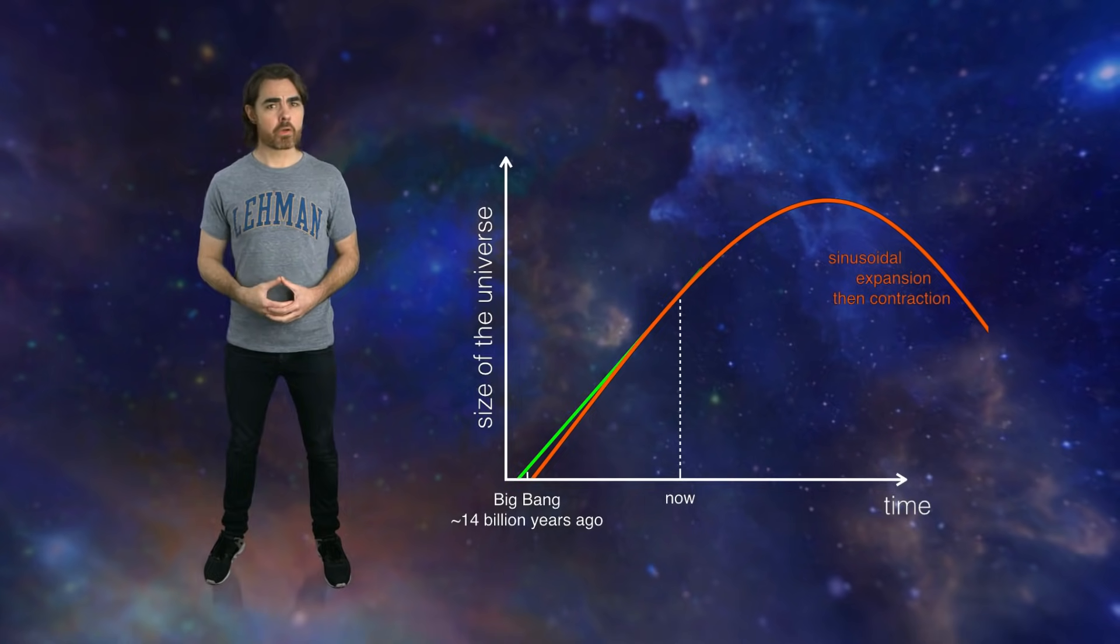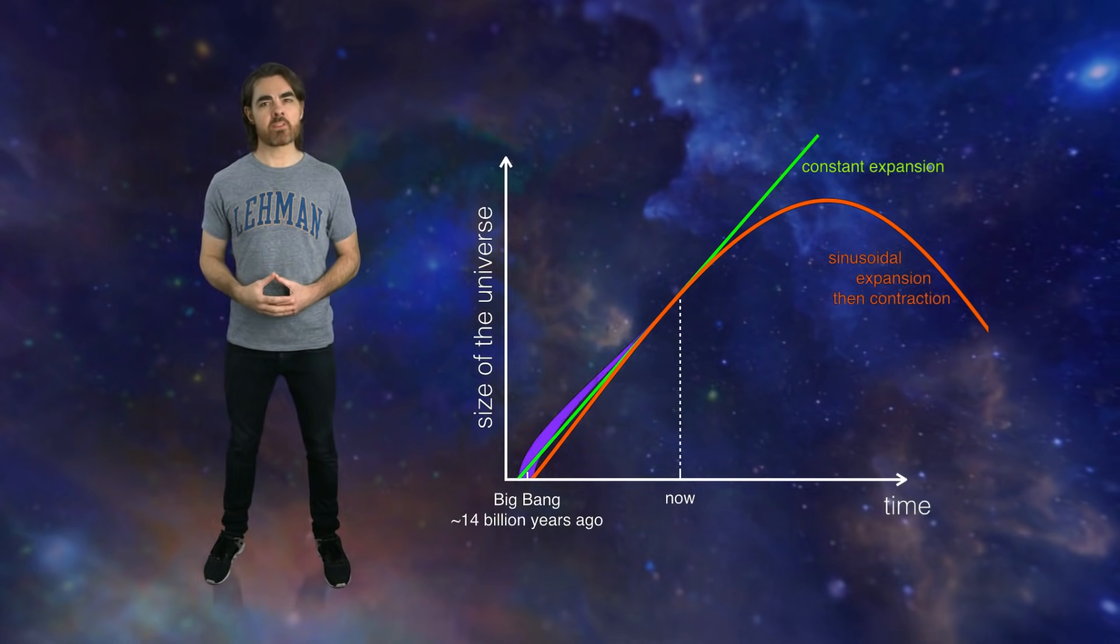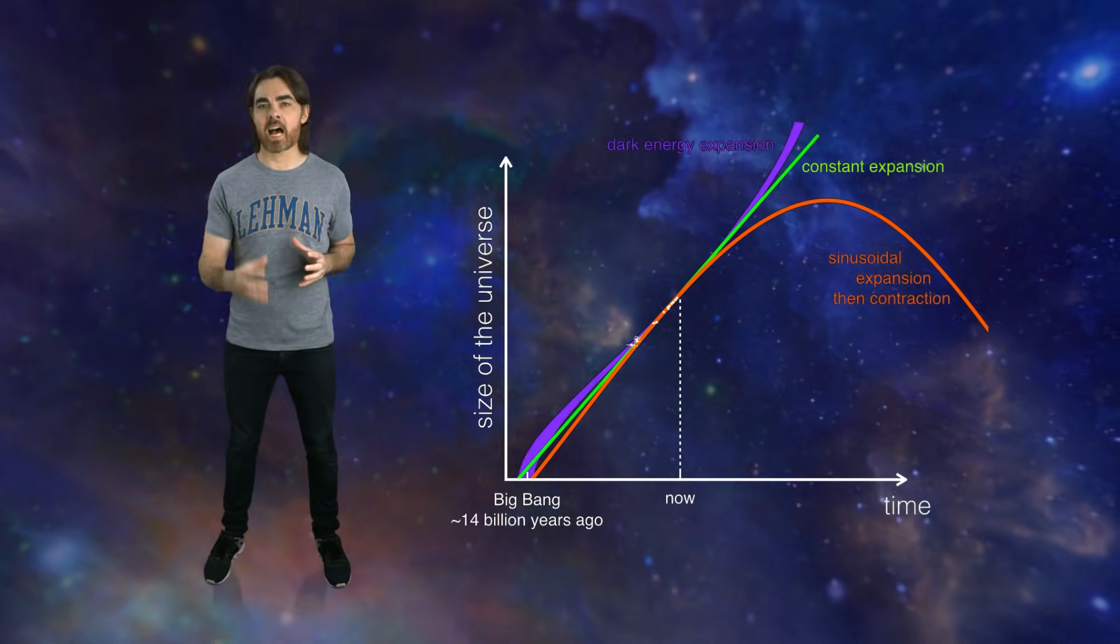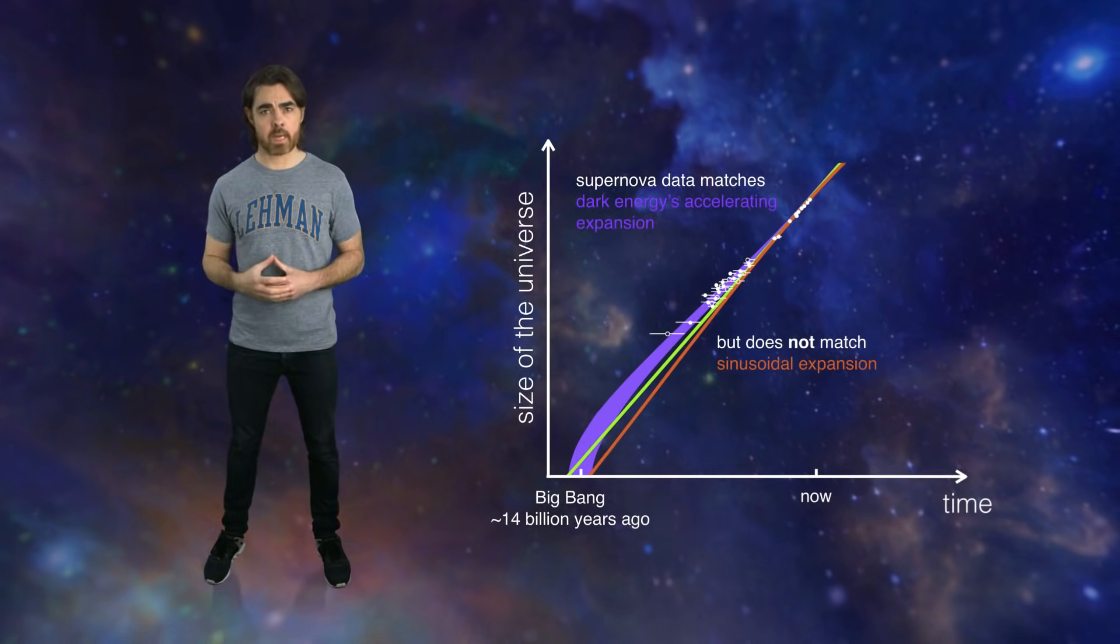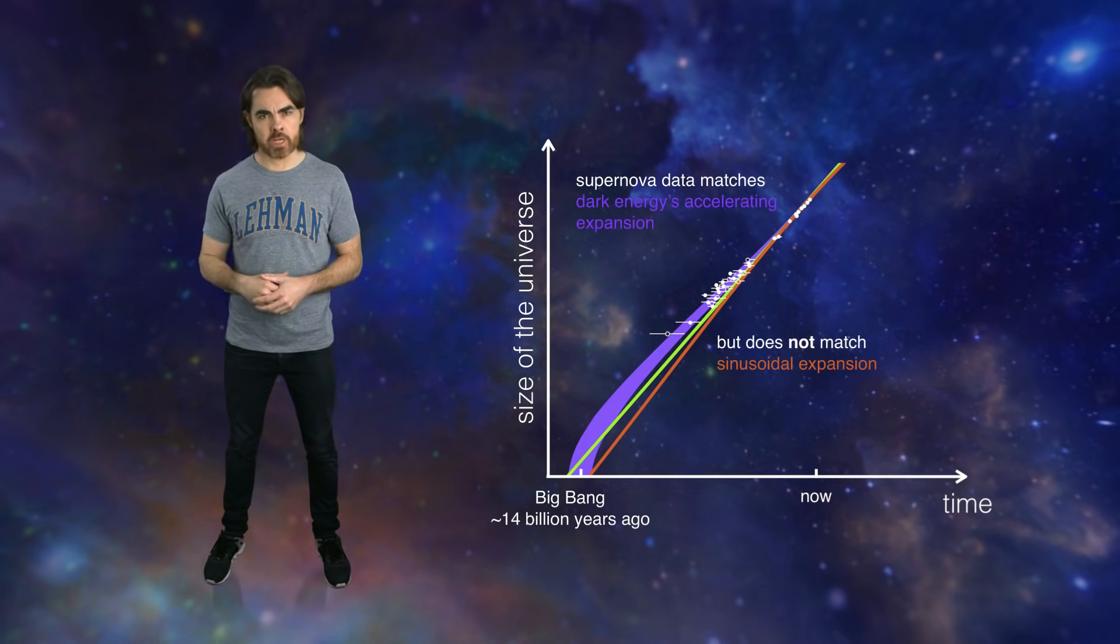We already know that a constant expansion rate happens to give a similar age to the standard dark energy age. But a constant or near constant expansion rate definitely does not fit the supernova data.